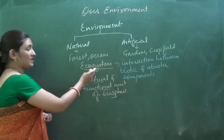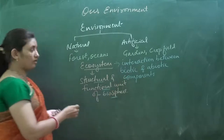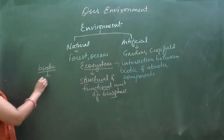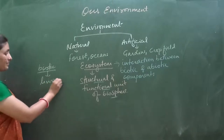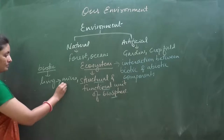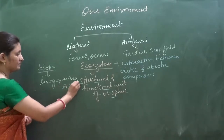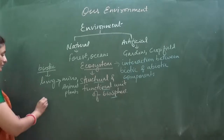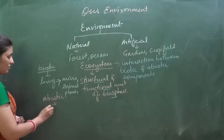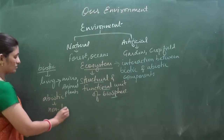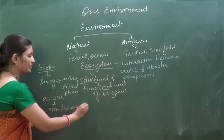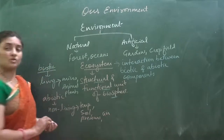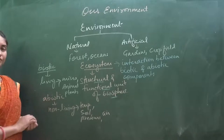In the ecosystem, as we defined, it is the interaction between the biotic and abiotic components. Biotic means related to living things — it includes microorganisms, animals, and plants. Abiotic components are non-living, which include temperature, soil, pressure, air, and water. Those are the abiotic components — not consisting of life.